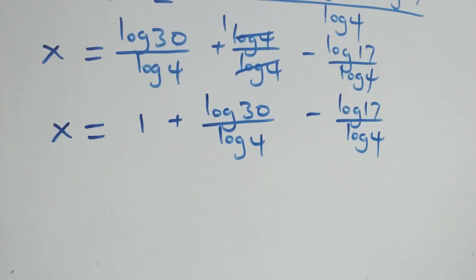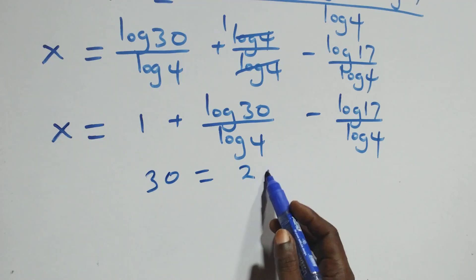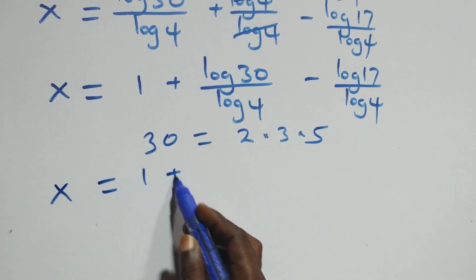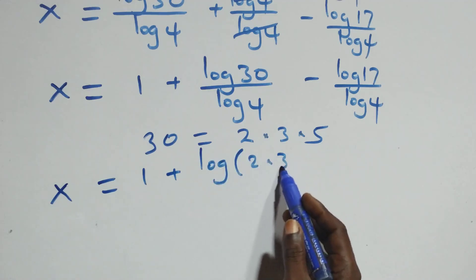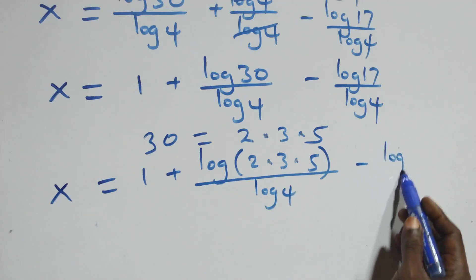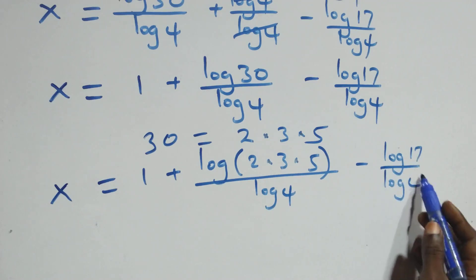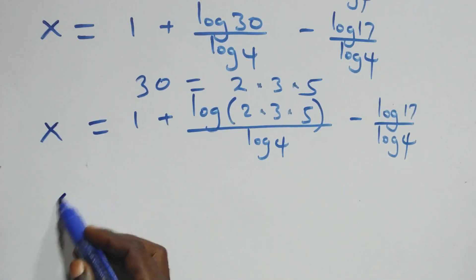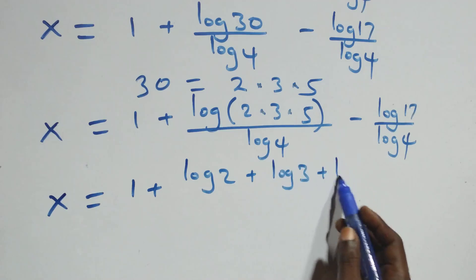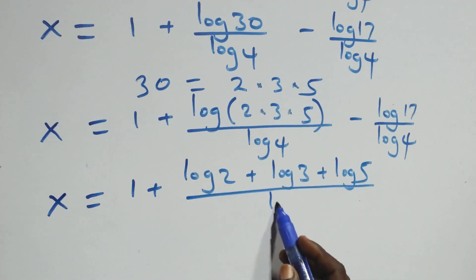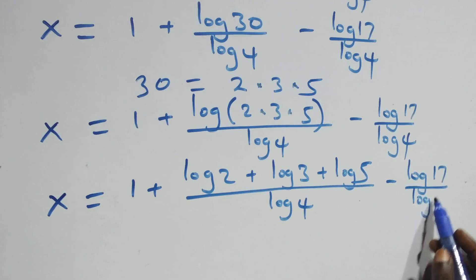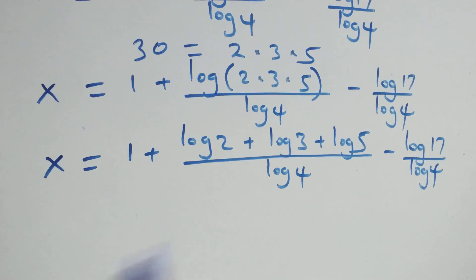The next step: 30 can be written as 2 × 3 × 5. So x equals 1 plus log(2 × 3 × 5) over log 4, then minus log 17 over log 4. Using the law of logarithms, we can expand log(2 × 3 × 5) as log 2 + log 3 + log 5.